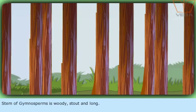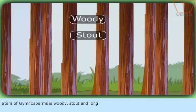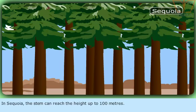Stem of gymnosperms is woody, stout and long. In Sequoia, the stem can reach a height of up to 100 meters.